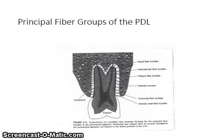The interradicular fiber group is present only in multi-rooted teeth and extends from the cementum in the furcation area of the tooth to the interradicular septum of the alveolar bone. These fiber groups help stabilize the tooth in its socket.